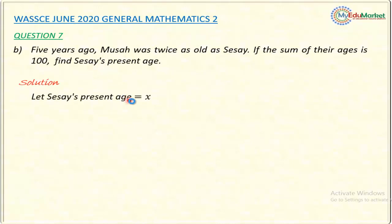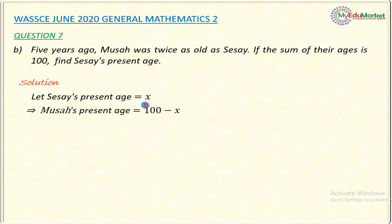Let Cissi's present age be X. X represents the present age of Cissi, and that is what we are asked to find. If X is the present age of Cissi, then Musa will be 100 minus X, because the sum of their present ages is 100. If one of them is X, the other's age is 100 minus X. So Musa's present age is 100 minus X.